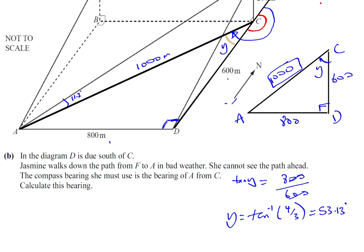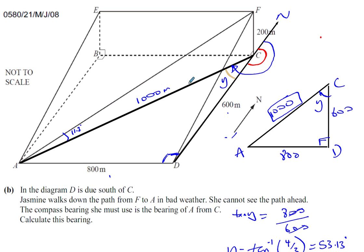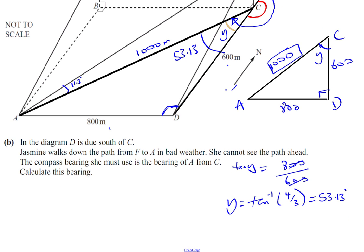And now I can work out my bearing, because I know that if this is 53.13, then my bearing is going to be 180 plus 53.13, which gives me 233.13 degrees.